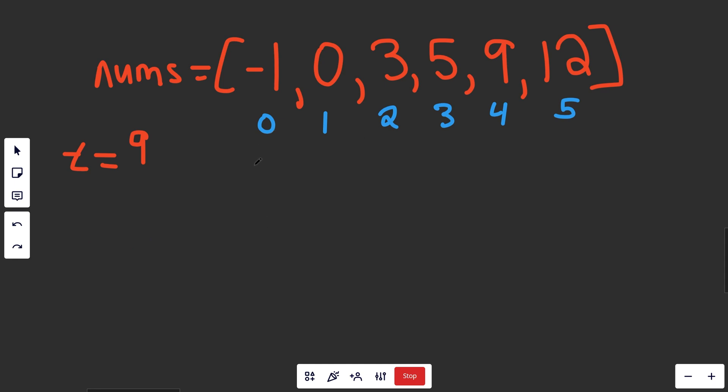Our algorithm goes like this. We have one pointer l that's at the beginning, equal to zero, and another pointer r that's going to be five, the last number. We calculate the midpoint as l plus r over two with integer division. So l is zero, r is five, we get five divided by two, that's 2.5 rounded down, which is two. So that's our middle index m.